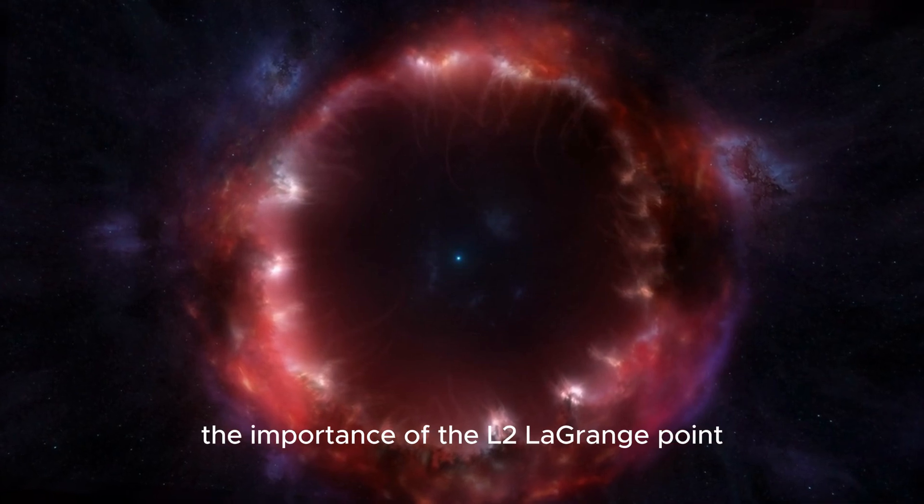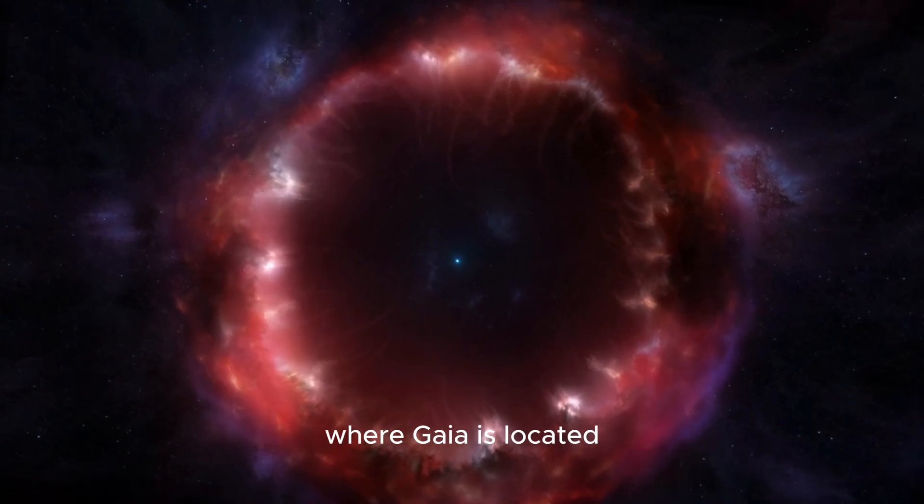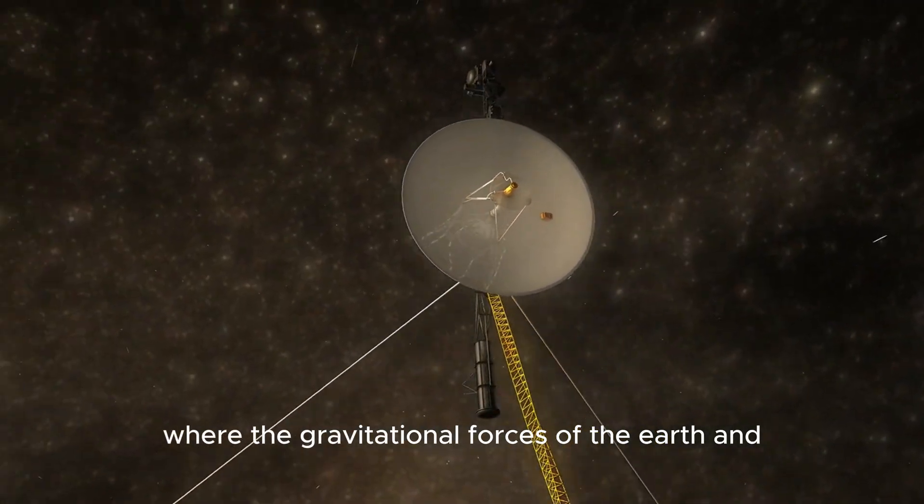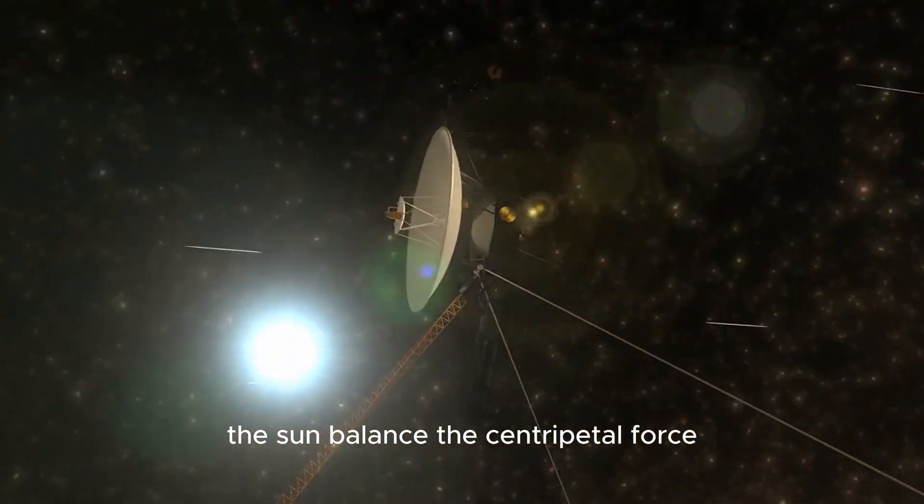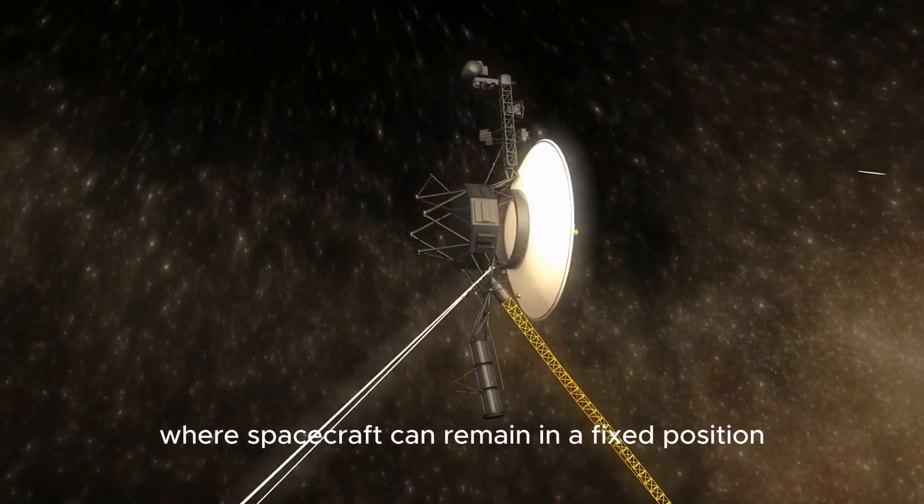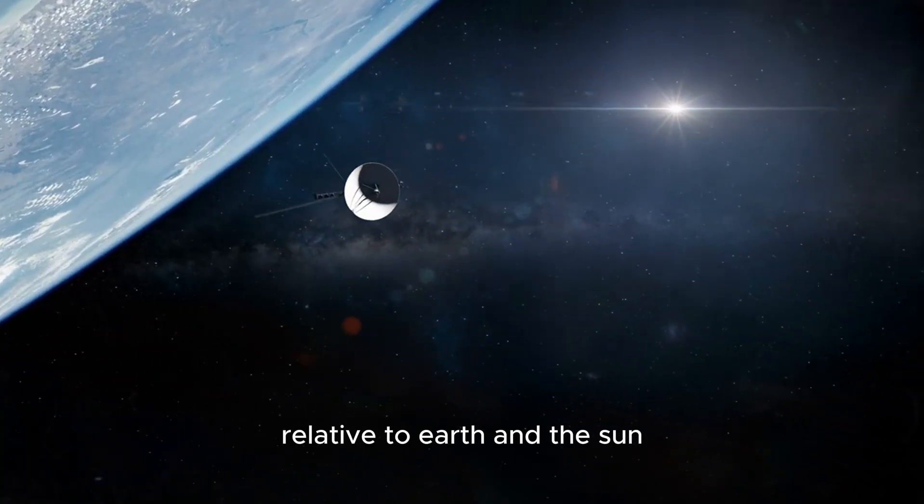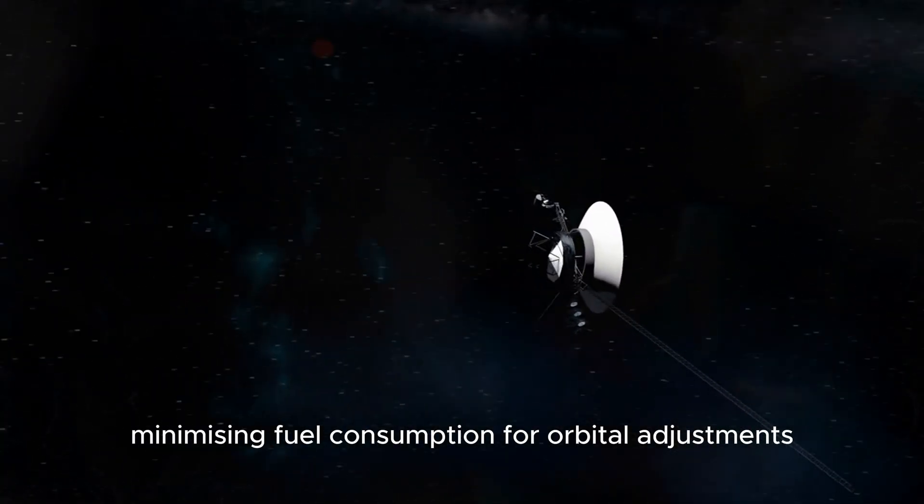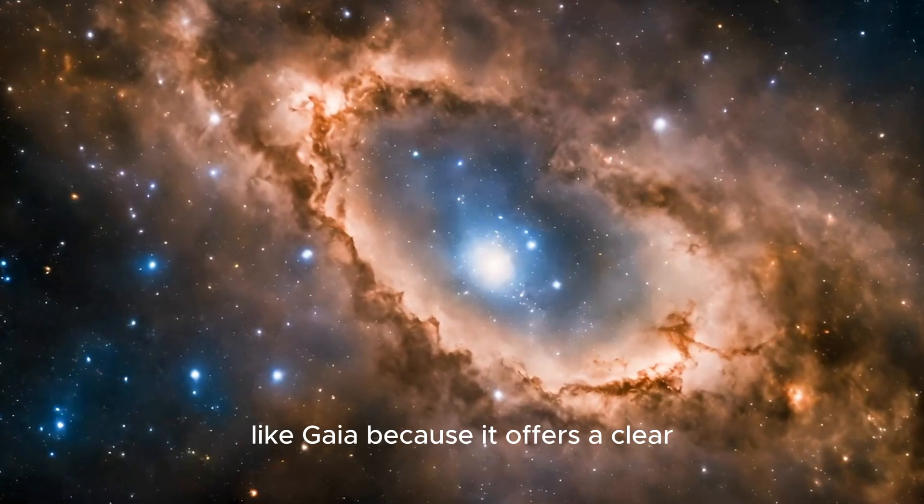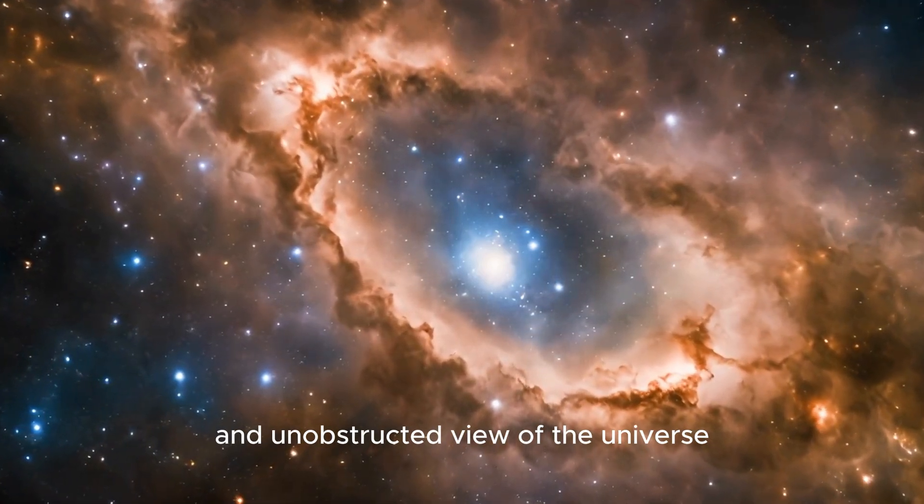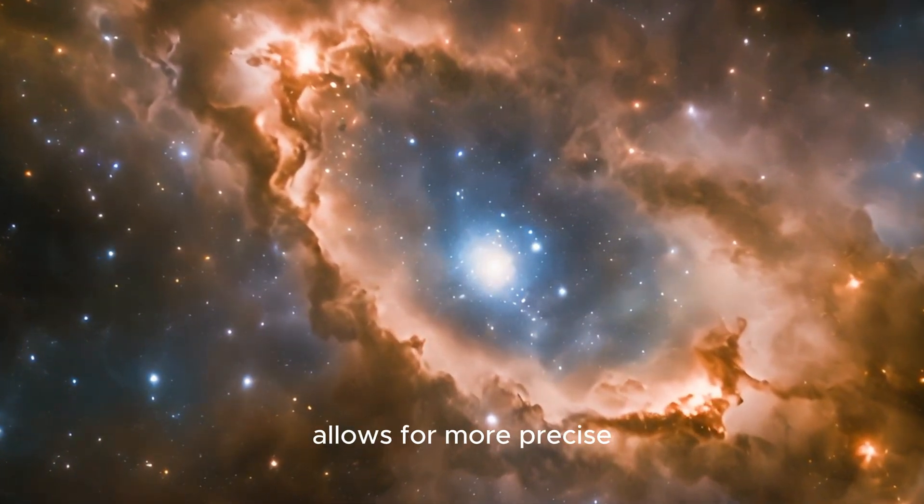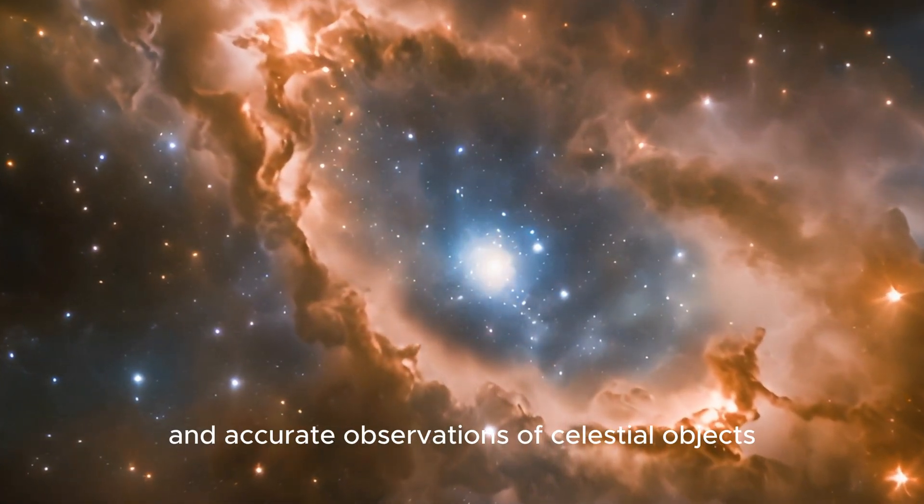Let's now turn our attention to the importance of the L2 Lagrange point, where Gaia is located. The L2 point is a region in space where the gravitational forces of the Earth and the Sun balance the centripetal force felt by a satellite. This creates a stable environment where spacecraft can remain in a fixed position relative to Earth and the Sun, minimizing fuel consumption for orbital adjustments. L2 is particularly advantageous for space telescopes like Gaia, because it offers a clear and unobstructed view of the universe.